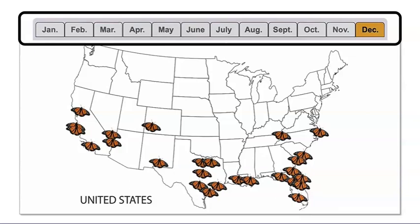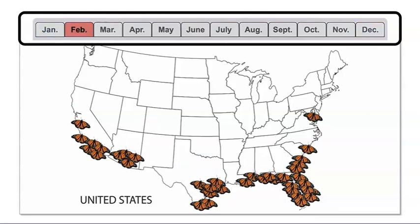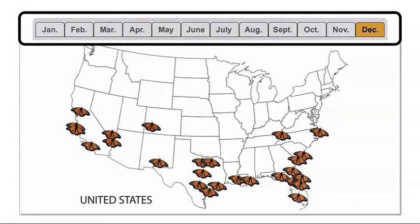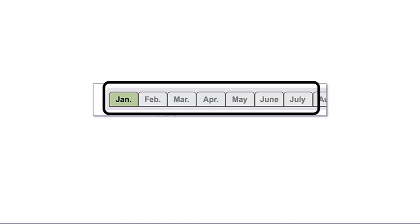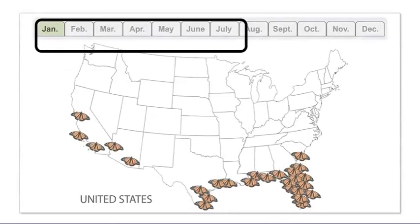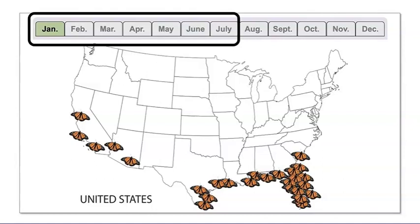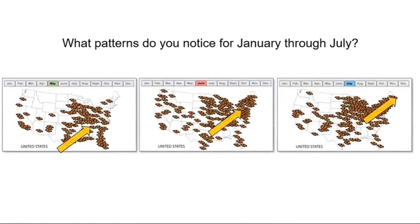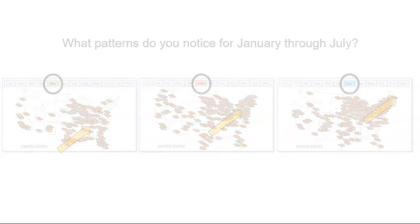Wow, let's watch it again. Isn't that amazing? Let's take a closer look at January through July. I noticed a lot of big changes during those months. What patterns do you notice about where the monarch butterflies are during each month of the year? I noticed that as the months passed, there are a lot more monarchs. More monarchs move toward the northeast as the temperature increases during the summer. I wonder what the butterflies do as it gets colder.